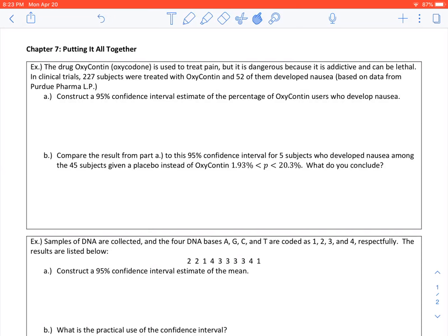The first example says the drug oxycodone is used to treat pain, but is dangerous because it's addictive and can be lethal. In clinical trials, 227 subjects were treated with oxycodone, and 52 of them developed nausea, based on data from Purdue. Part A says construct a 95% confidence interval estimating the percentage of oxycodone users who develop nausea.